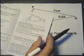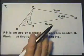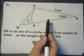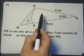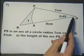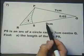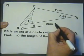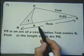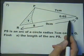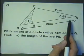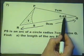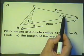I'll read this. It says in the triangle PQR, QP is 7 cm, QR is 9 cm, and the angle PQR is 0.65 radians, so we're working in radians this time.